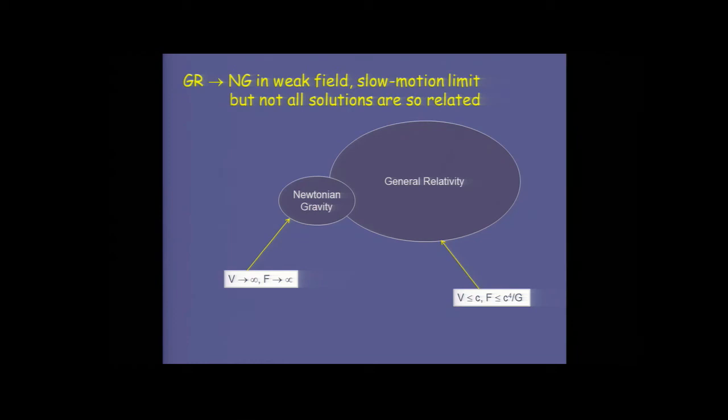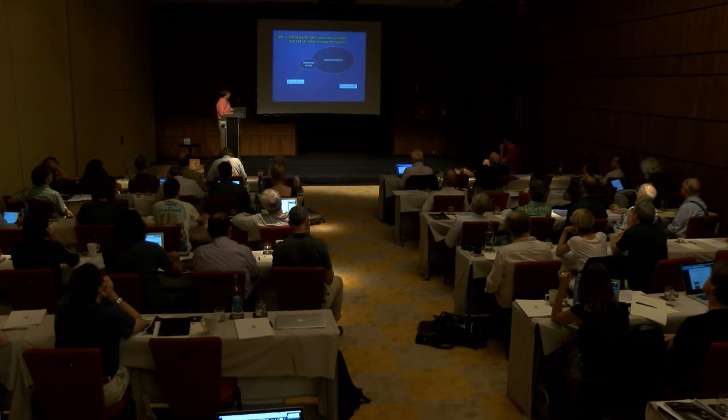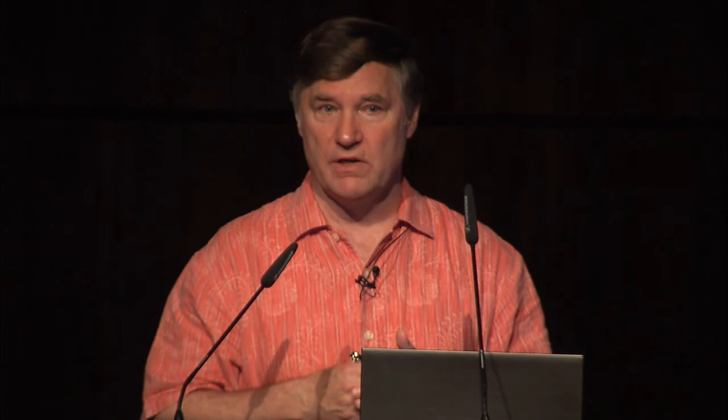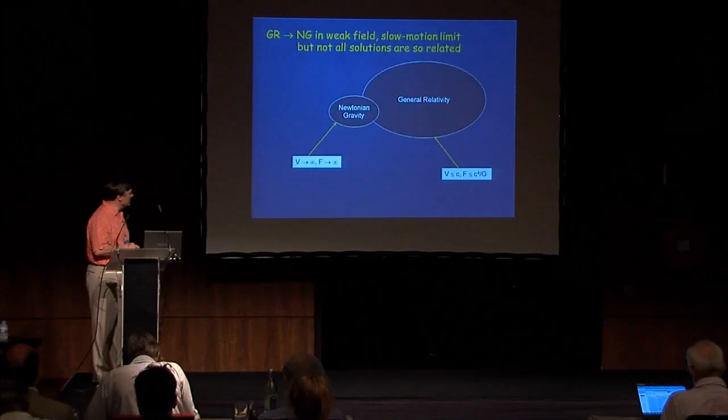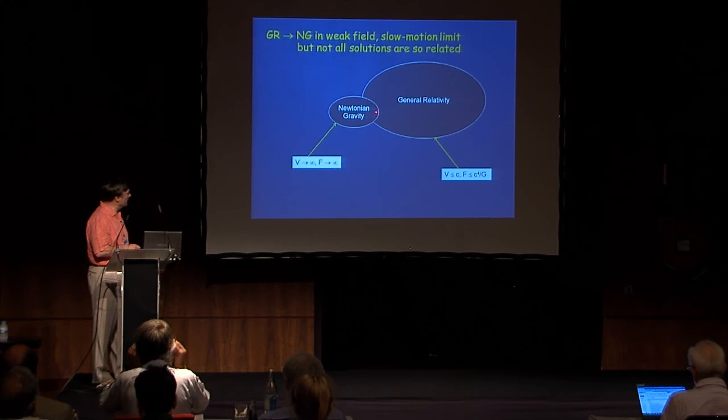Newtonian gravity has some overlap with general relativity in terms of its solutions. There is a large set of solutions of Einstein's equations, a smaller set of solutions of Newton's theory of gravity, and there is some overlap. But there are solutions of general relativity which have no Newtonian counterpart, and there are solutions of Newtonian gravity that have no general relativistic counterpart. The simple cosmological models we know and love, like the Friedman models, mathematically live in this overlap region, identified by Milne and McRae long ago.